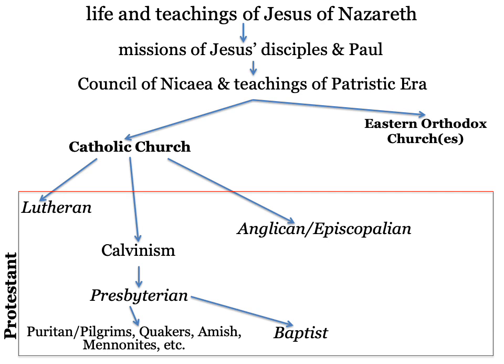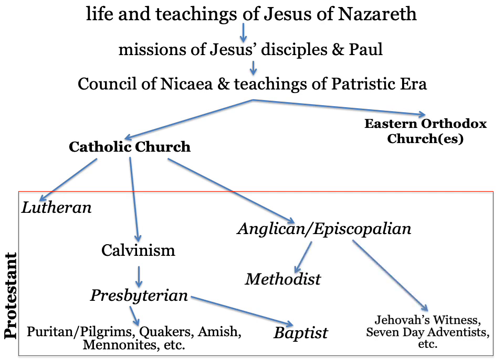Henry had two choices: listen to the pope and hear 'no,' which he'd never heard in his life — meaning no male heir with Anne Boleyn — or break away from the church. Original Anglicanism, known as the Anglican Church in the United Kingdom and the Episcopalian Church in the United States and Canada, are exactly the same thing with the same leader, the Archbishop of Canterbury. The original form was very similar to Catholicism, eventually getting rid of some saints.